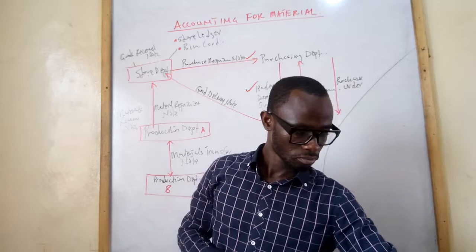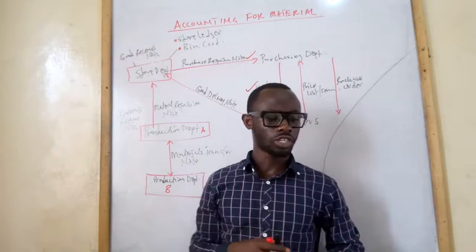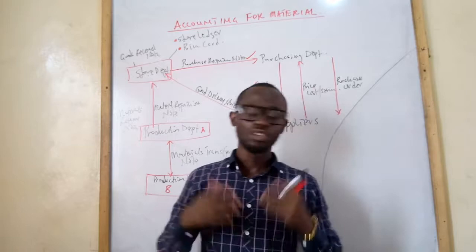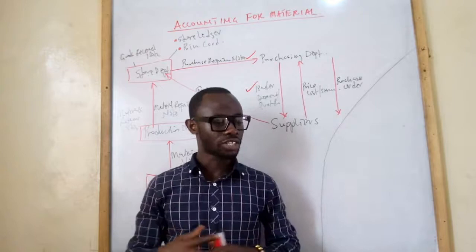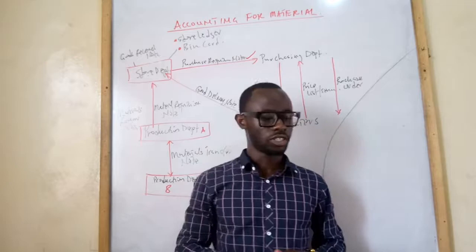Codification of stocks refers to the use of numbers, letters and symbols for the identification of materials. Benefits of using codes include time savings, prevention of ambiguity, accurate identification of material leading to production efficiency, making computerization easier, and being more flexible. These are the reasons why we need to code our stocks.